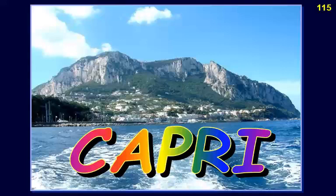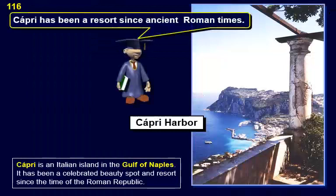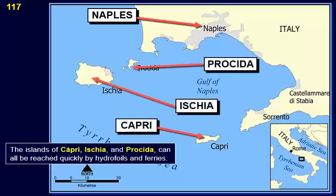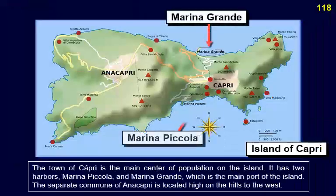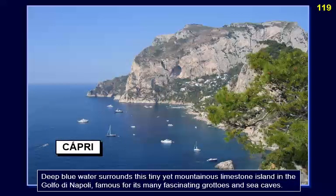Capri is an Italian island in the Gulf of Naples and has been a celebrated beauty spot and resort since the time of the Roman Republic. The islands of Capri, Ischia, and Procida can all be reached quickly by hydrofoils and ferries. The town of Capri is the main center of population on the island, with two harbors — Marina Piccola and Marina Grande, which is the main port. The separate commune of Anacapri is located high on the hills to the west. Deep blue water surrounds this tiny yet mountainous limestone island, famous for its many fascinating grottoes and sea caves.